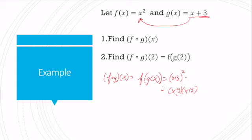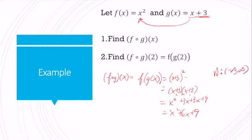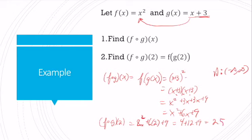I need to FOIL that out — FOIL being first, outer, inner, last — to make sure each term of each binomial is multiplied by the other. That gives me x squared plus 3x plus 3x plus 9, which simplifies to x squared plus 6x plus 9. This is a quadratic, so its domain is negative infinity to positive infinity. To find f composed with g of 2, I substitute 2 into the new function: 2 squared plus 6 times 2 plus 9 equals 4 plus 12 plus 9, which is 25.